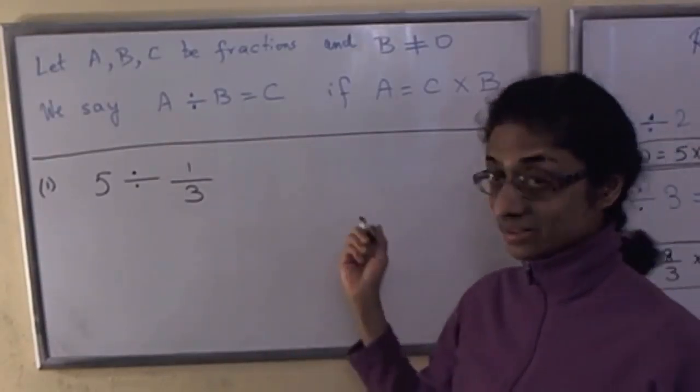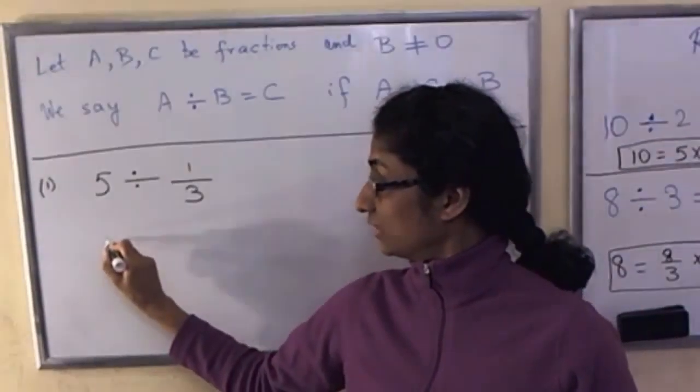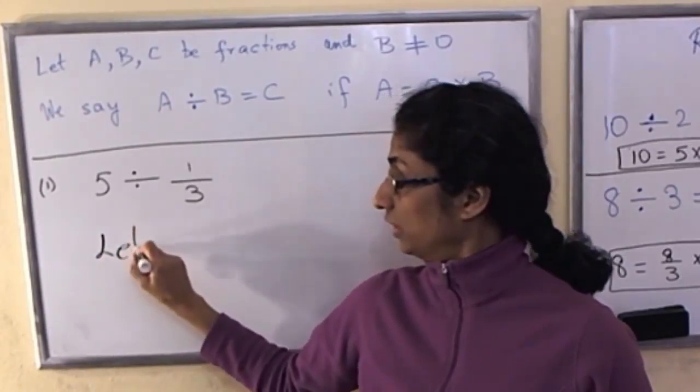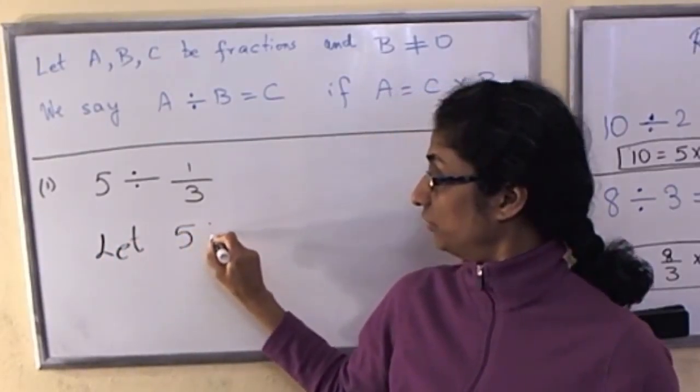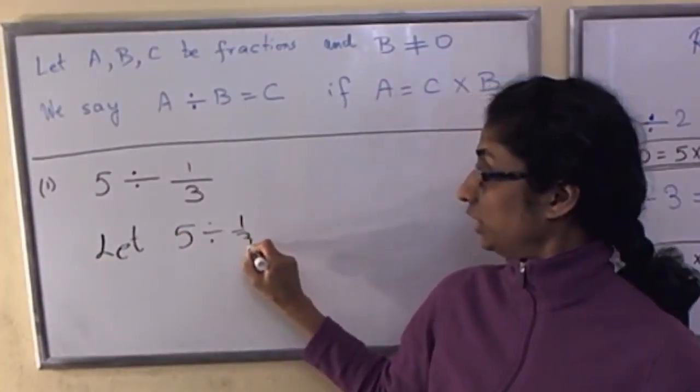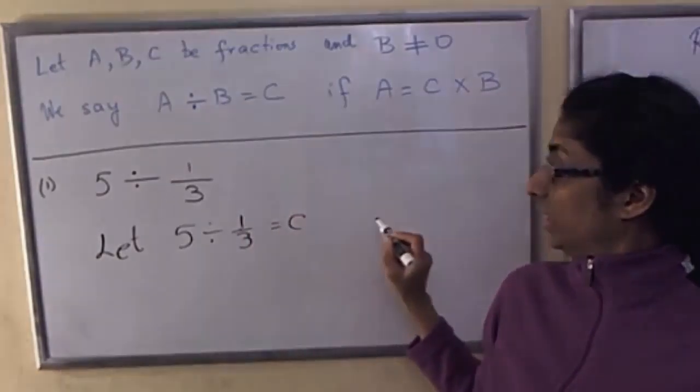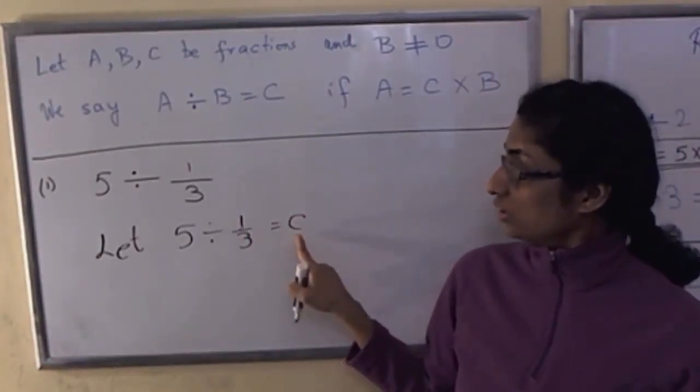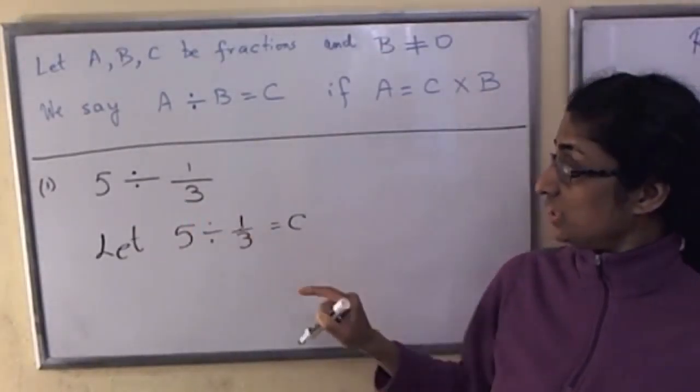The definition tells you it's another fraction c. So let's write that here. Let 5 divided by 1 third equals c. And we would like to know what the c is. That's what it means to do this computation.